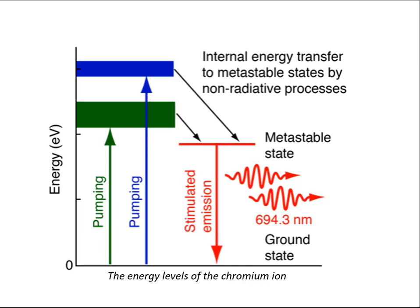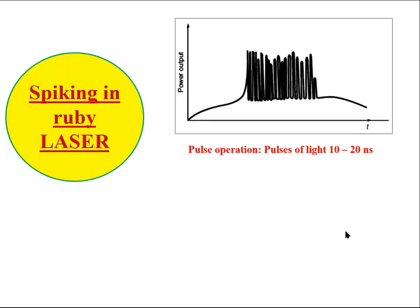In either case, the ion immediately makes a non-radiative transition to the metastable state. The excess energy is absorbed by the lattice and does not appear as electromagnetic radiation. Since the metastable state has a very long lifetime, the number of atoms in that state keeps increasing and may achieve population inversion between the metastable state and the ground state. Once population inversion is achieved, light amplification can take place through stimulated emission. Thus, ruby laser is an example of a three-level laser. The flash operation of the lamp leads to a pulsed output in short periods of a few tens of nanoseconds.